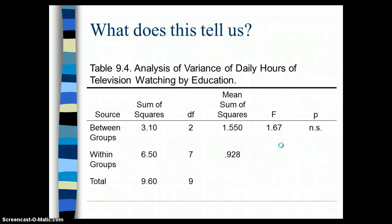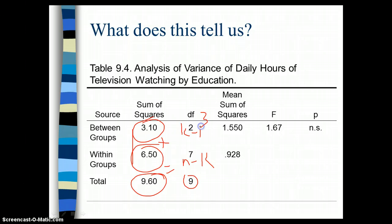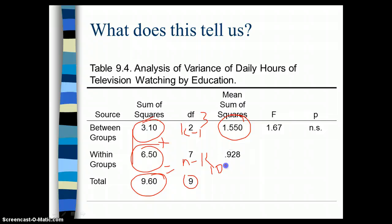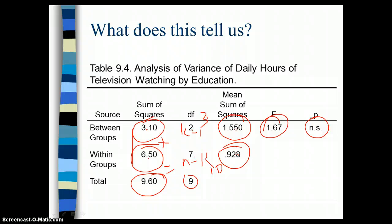What does this tell us? This is the sum of squares between, this is the sum of squares within, and this is the total sum of squares — we've just added them. This is k minus 1, this is n minus k, and this is the total. So we know that we have three groups and 7 plus 3 is 10 participants. The mean sum of squares between: we've simply divided 2 into 3.1, and 7 into 6.5 for within. Then the F ratio is this divided by this. For those degrees of freedom, this is not a significant F. So we cannot say that there is a significant difference in daily hours of television watching by education.